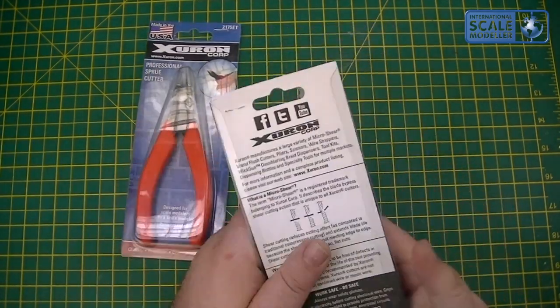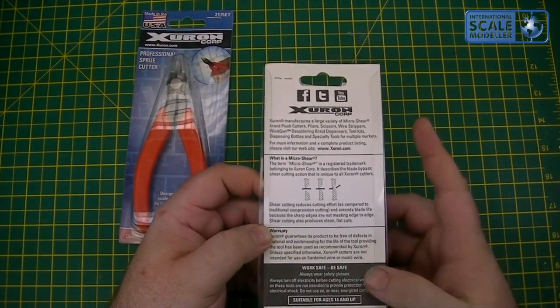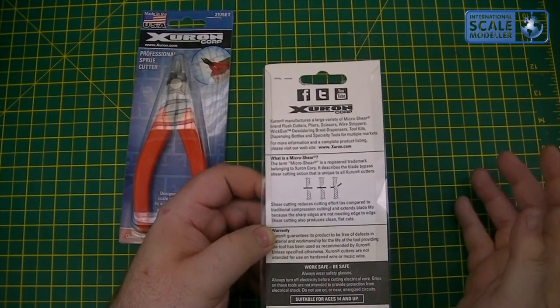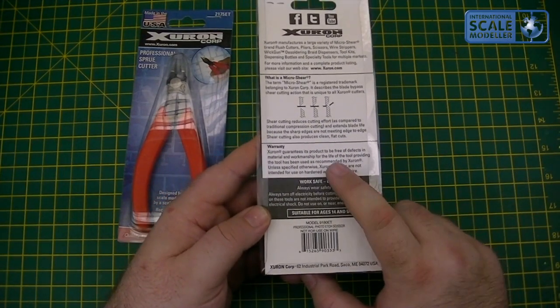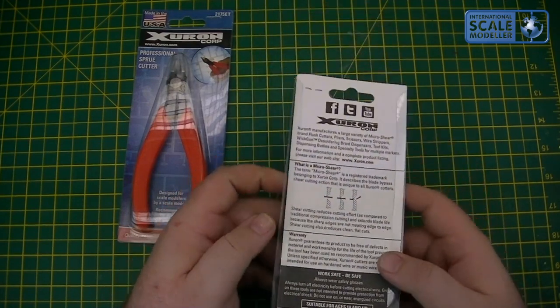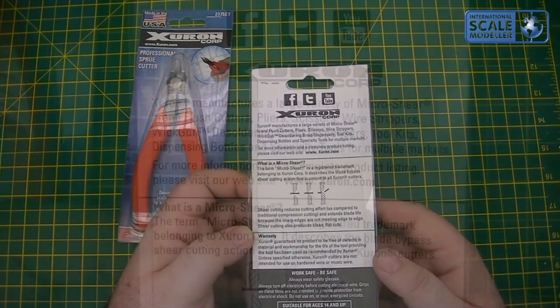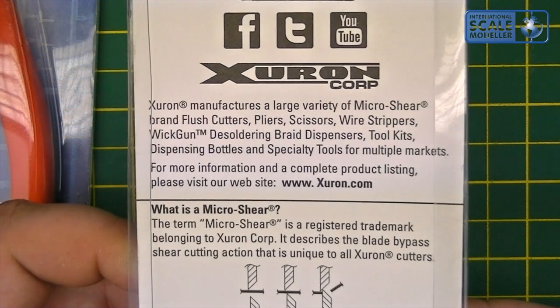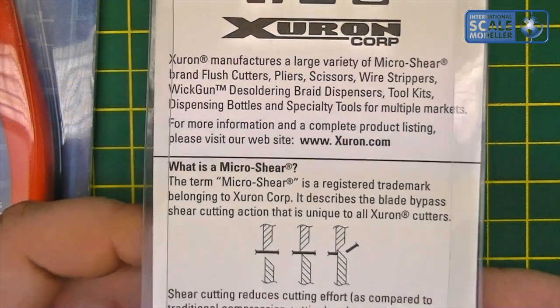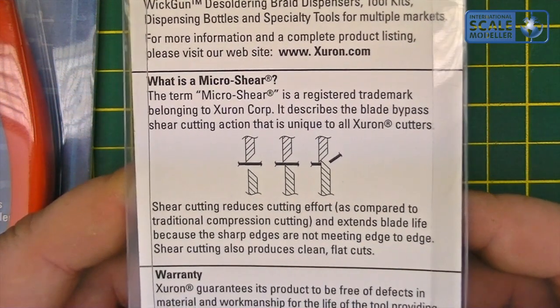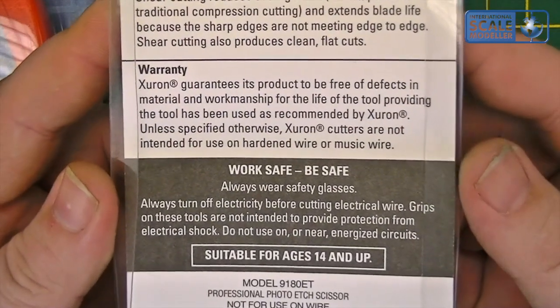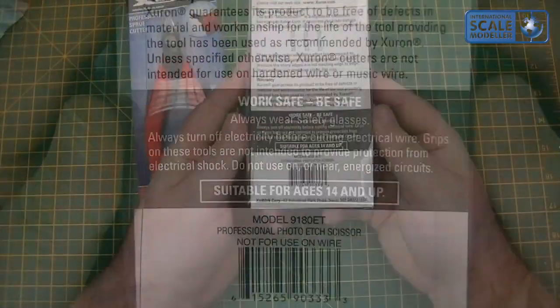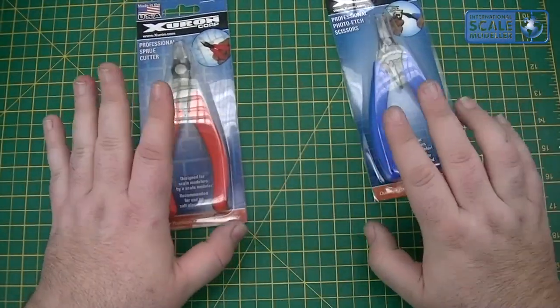A little bit of information on the back before we get through. The information is identical on the back of each one, so I'm not going to read it all. It runs through the manufacturer, the Microshear trademark name, and the lifetime warranty. I'll stop on certain parts—if you want to read it, pause it and you can read it at your own speed.